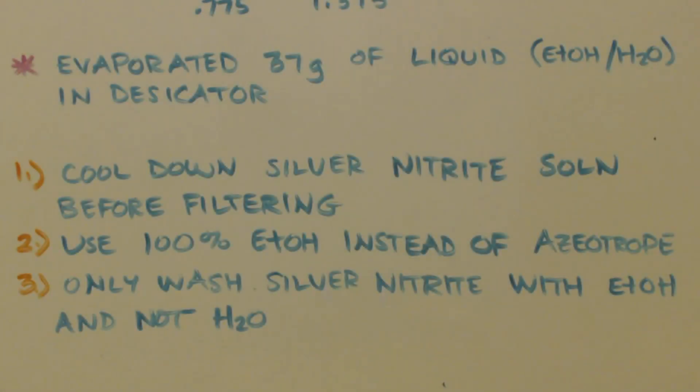Okay, now what would I do different about this to try to get more than 94% yield? Number one, I would cool down the silver nitrate solution before filtering it. Just to get as much precip out as I could, even though it's just a little bit. Second, I would use 100% ethanol instead of the azeotrope for the washings. And third, I would only wash with the silver nitrite with ethanol and not water. Remember, the first wash I used water, then I used two washes of ethanol. I would switch that to three washes of ethanol, pure ethanol, not azeotrope. And that's basically the only thing I would do different.